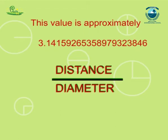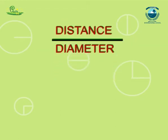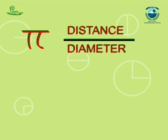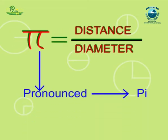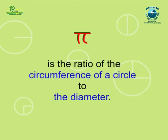We use the Greek letter pi to represent this value. So pi is the ratio of the circumference of a circle to the diameter.